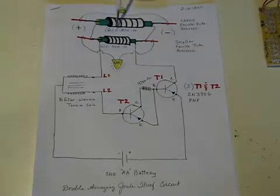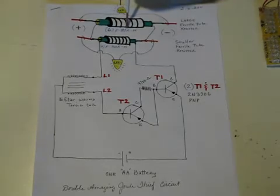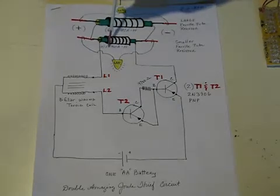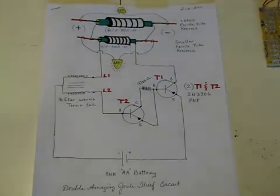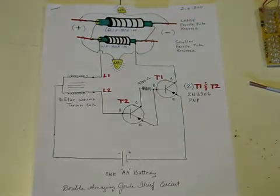And they are F-87A-8. The littler ones are F-87A-8. There's the double amazing jewel thief circuit.